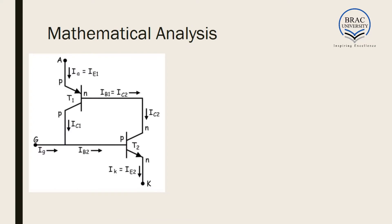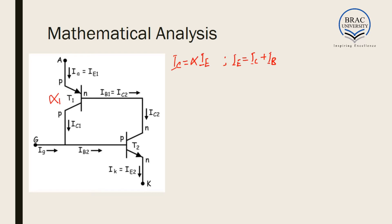Now let us look at the mathematical analysis. We have two transistors here and we need to remember the driving equations of a BJT. Firstly, collector current is equal to alpha times emitter current. The second equation is: emitter current equals collector current plus base current. In our analysis, these two will be the driving equations. Here alpha is the common base current gain. Since there are two transistors, let us consider the current gain of transistor one is α1 and the current gain of transistor two is α2.